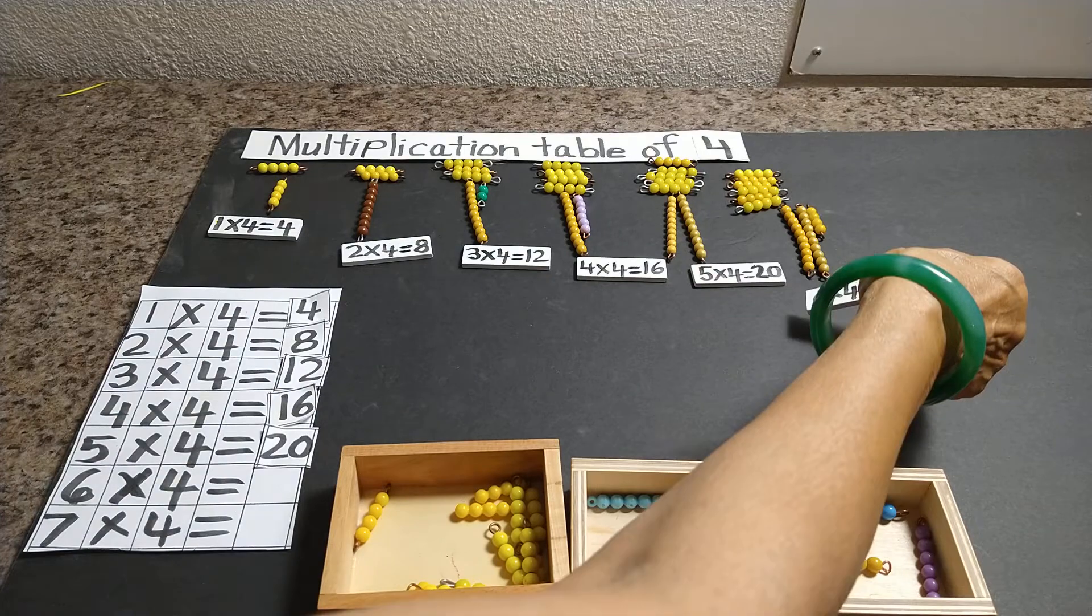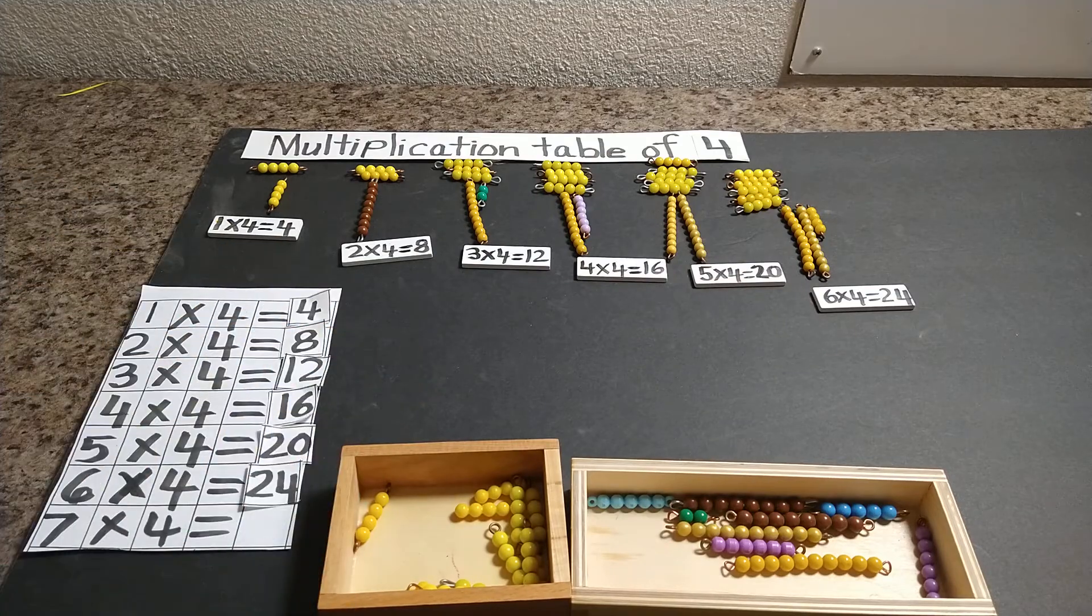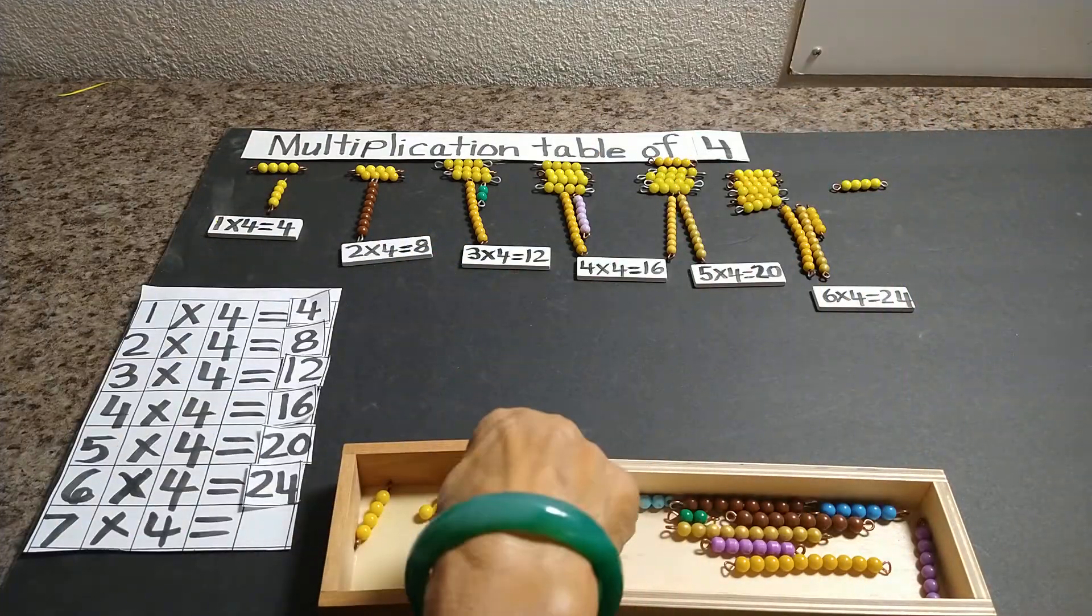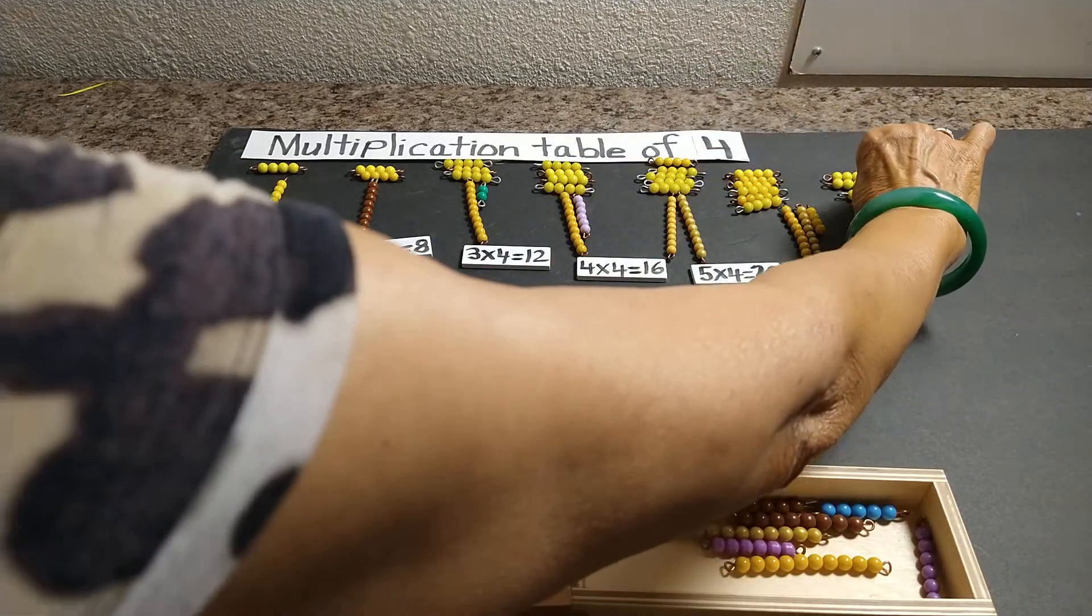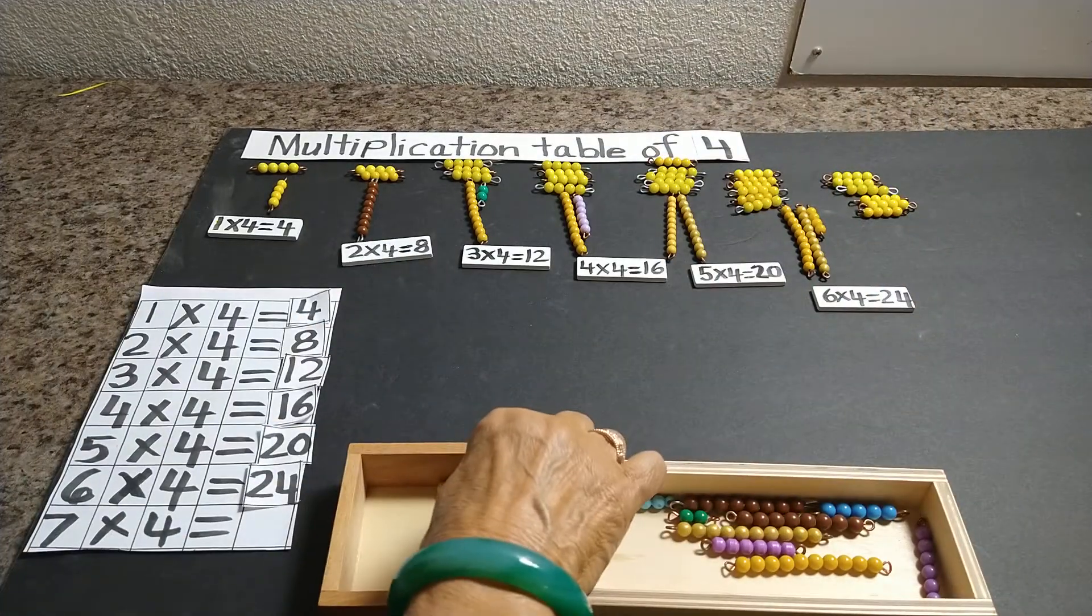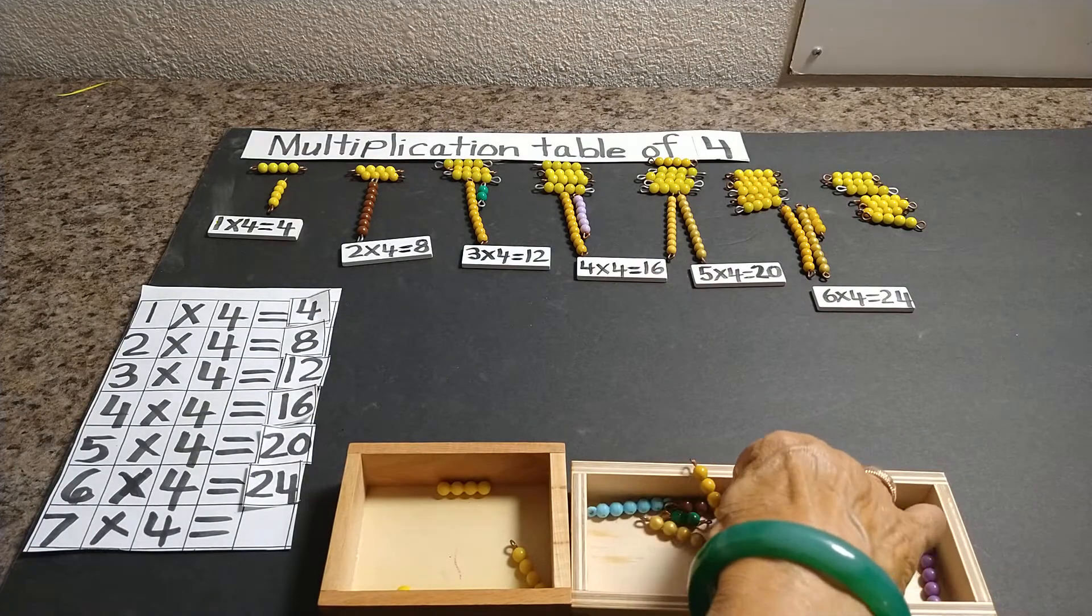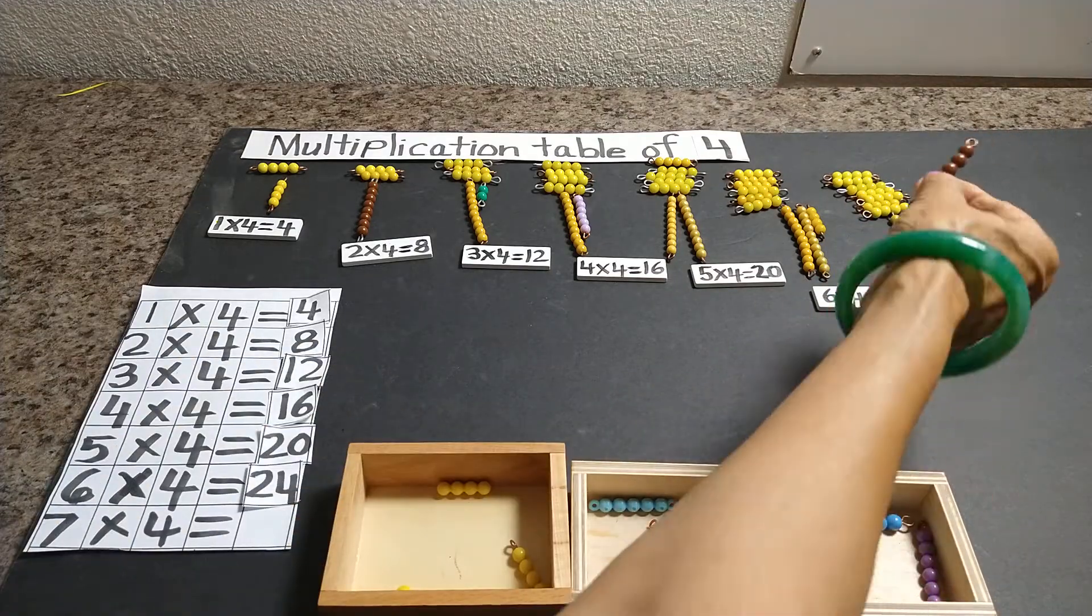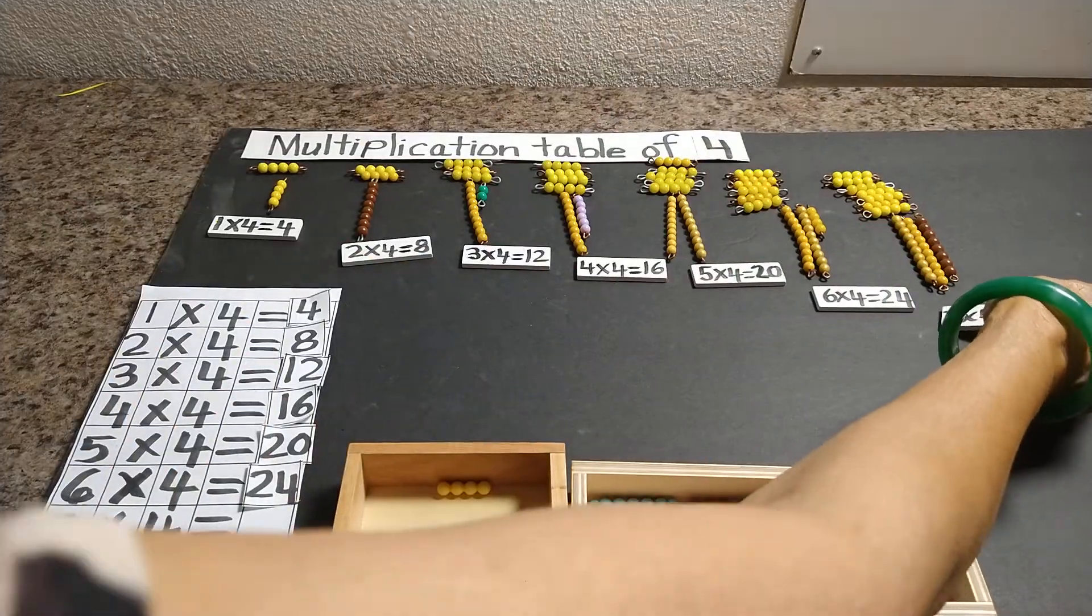Now we are right here. 7 times 4. 1 times 4, 2 times 4, 3 times 4, 4 times 4, 5 times 4, 6 times 4, 7 times 4 is 28. So we need 2 ten bars, 20, and we need 8 bead bars. 20 and 8 more are 28. So I am going to place 28 here.